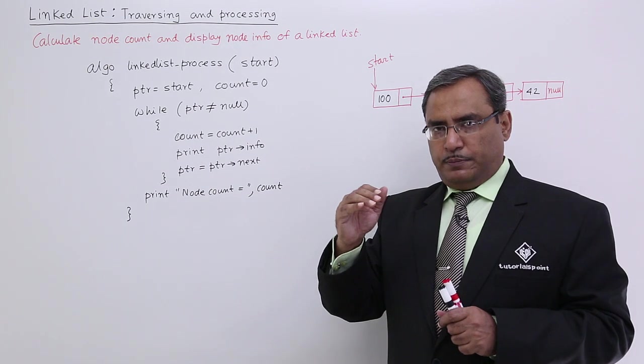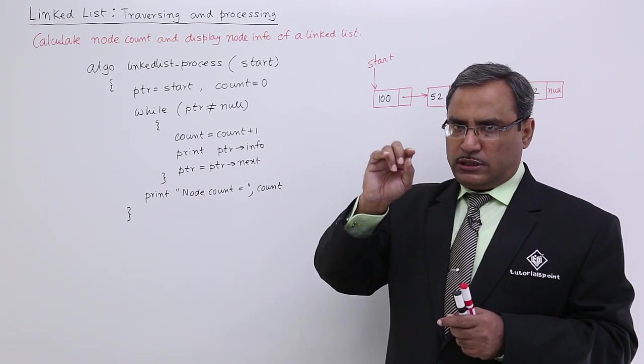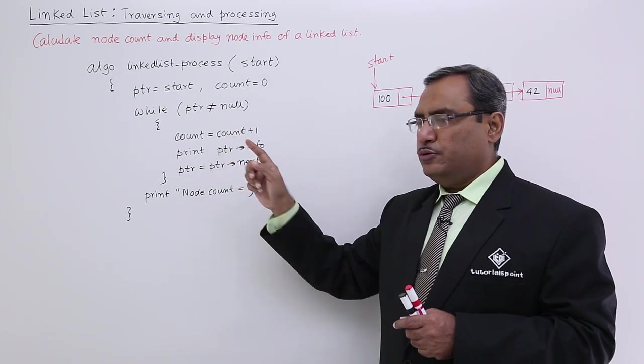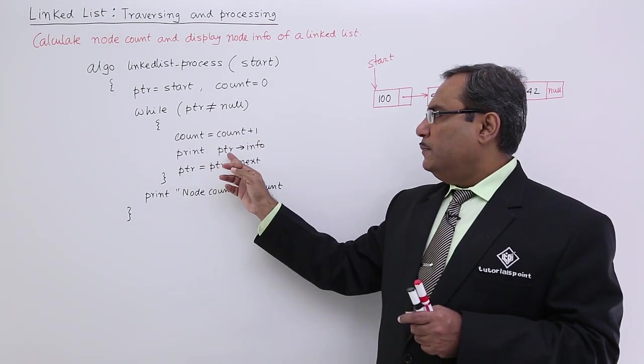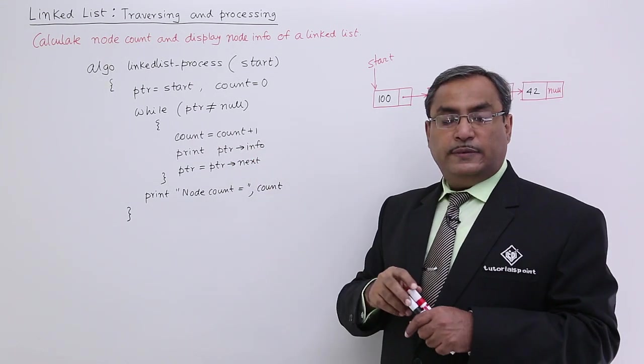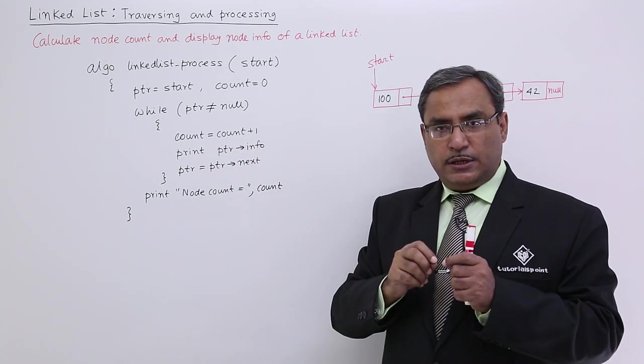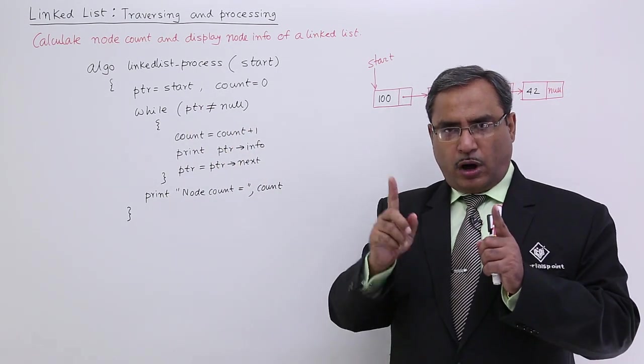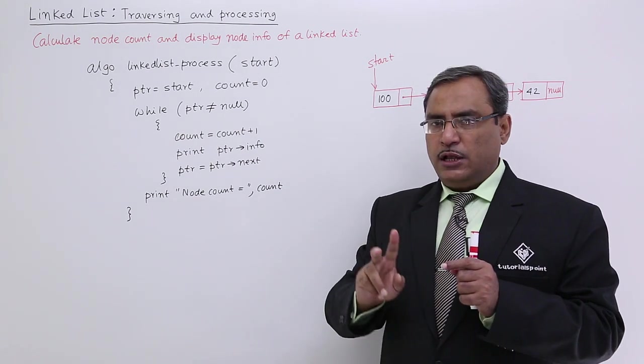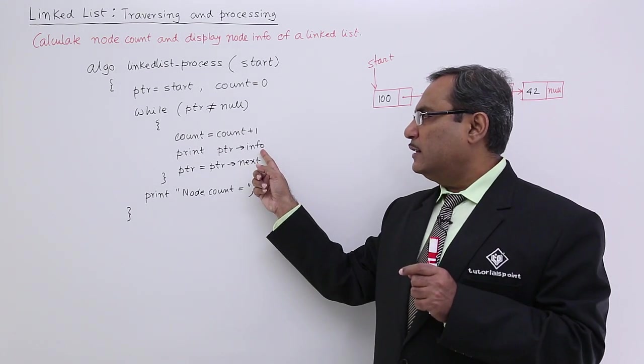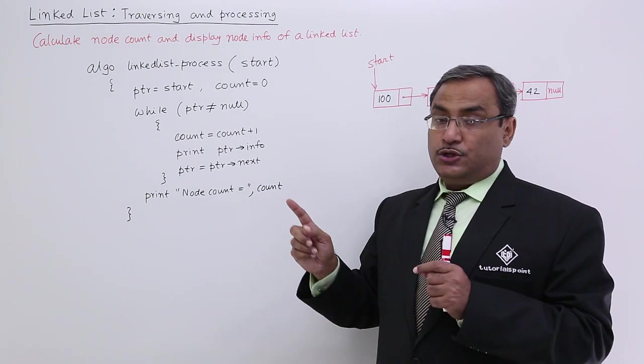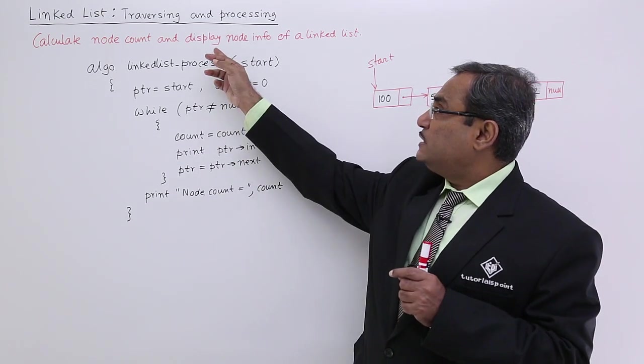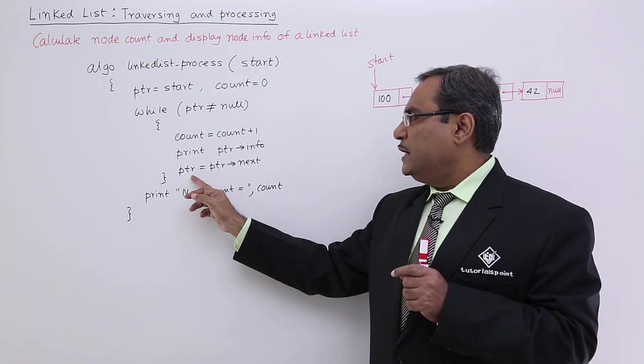Initially above the while construct, count value is 0. Before the while, count was 0, now count will go on increasing. So print PTR implies info. The PTR is pointing to a certain node and each node of this linked list is having two fields: the info field and the next field. PTR implies info is getting printed because it was told to display the node info and PTR is equal to PTR next.